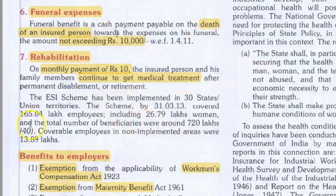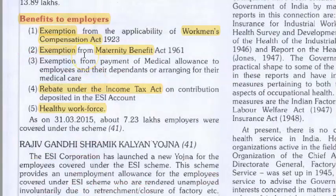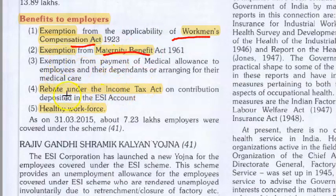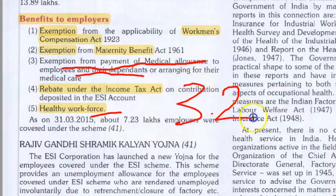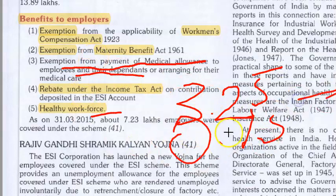What are the benefits to employers who register under ESI? ESI will handle the Workmen's Compensation Act, maternity benefit, and everything under it. You don't have to do anything extra. You will also get income tax rebate, a healthier workforce through regular checkups, and exemption from paying medical allowance to employees and dependents. However, you are paying 3.25% as employer.